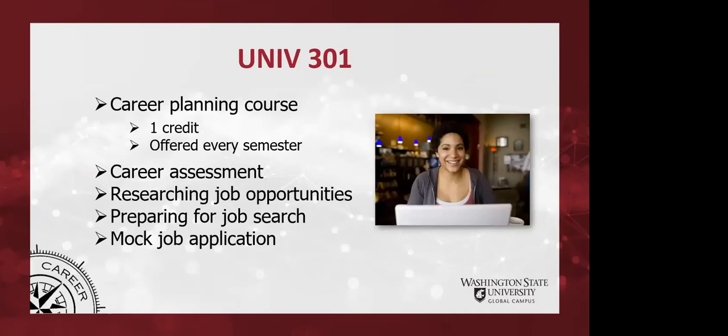Another option for students is a course I facilitate every semester — fall, spring, and summer. It's called University 301, a career planning course. It's one credit and has four main areas — a slower career counseling process that breaks down those four career development areas over the course of a semester.